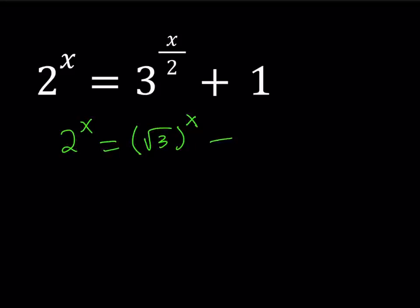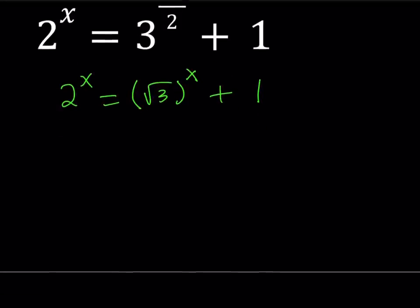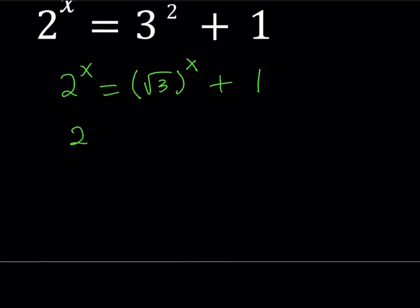So this is my equation, and I know that at this point some people are just going to guess and check their solutions. But we do need a more systematic approach. So, at this point, I would like to divide everything by 2 to the power x. Let's go ahead and do that and see what happens. Divide by 2 to the power x, divide by 2 to the power x, and divide by 2 to the power x.